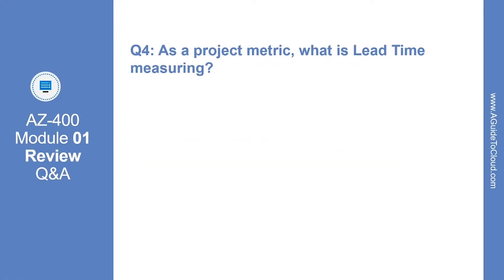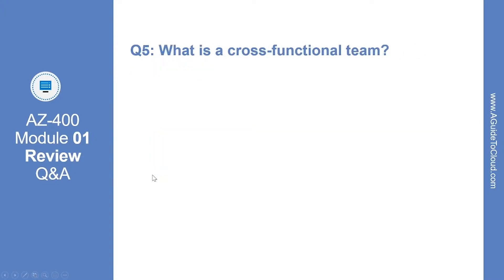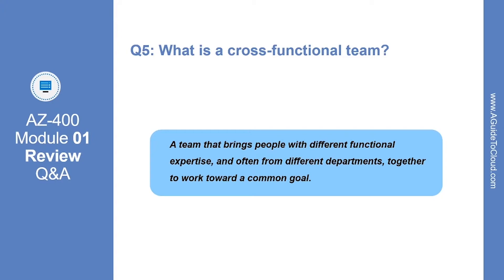Question number 4: as a project metric, what is lead time measuring? The right answer is lead time measures how long it takes from starting on a work item until it is deployed. Question number 5: what is a cross-functional team? The correct answer is a team that brings people with different functional expertise, often from different departments, together to work towards a common goal.